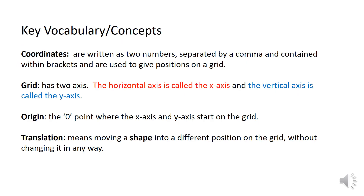To finish this unit, let's go over the key vocabulary once more. Coordinates are written as two numbers separated by a comma and contained within brackets, and they're used to give positions on a grid. A grid has two axes: the horizontal axis is called the x-axis and the vertical axis is called the y-axis. The origin is the zero point where the x-axis and y-axis start on the grid. Translation means moving a shape into a different position on the grid without changing it in any way. There are some worksheets for everything we've covered — have a go!